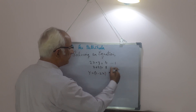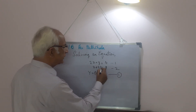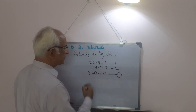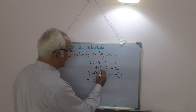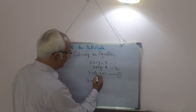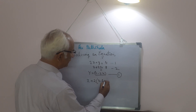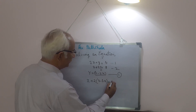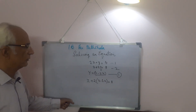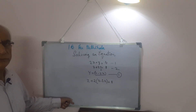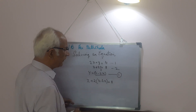This value of y that we found from equation 1 — we put that value into equation 2: x plus 2y becomes x plus 2(4 minus 2x) is equal to 8. Now you see it has become an equation in one variable, from which we can find the value of x.